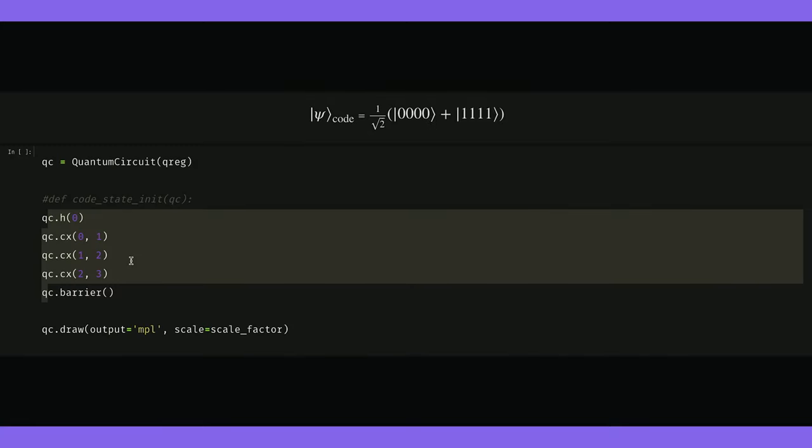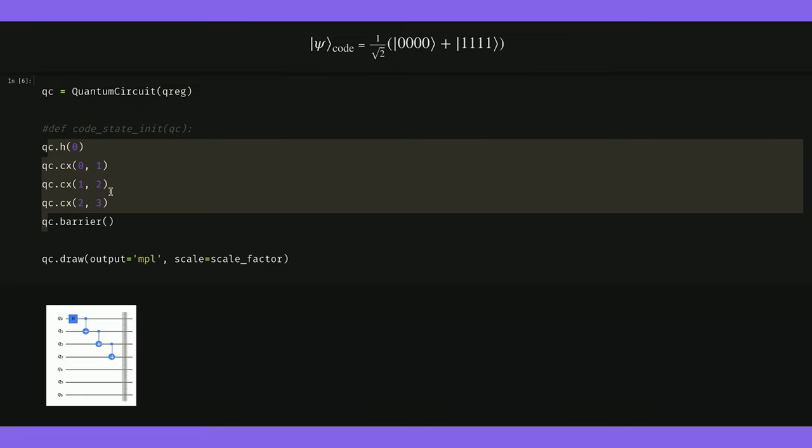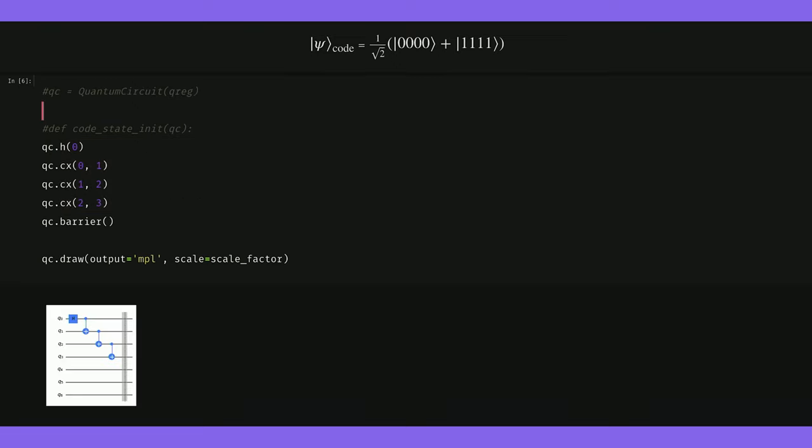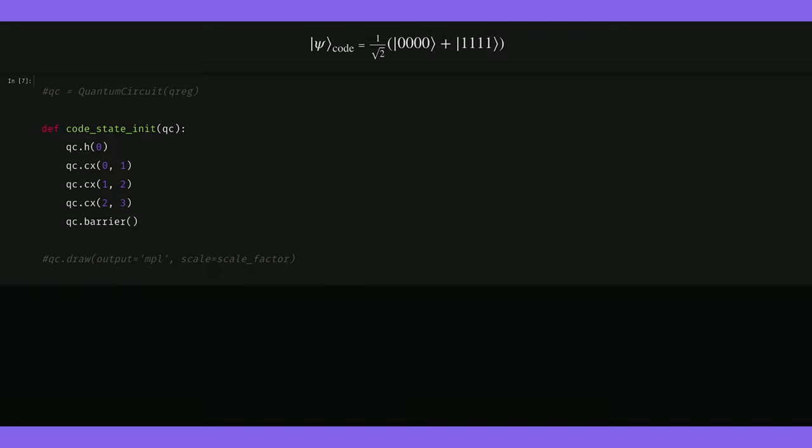We can do this by doing a Hadamard on qubit zero, followed by a series of CNOTs. Uncommenting and recommenting what we do and don't need, we can create a method that does this. I should note that this initial state preparation is not fault tolerant, meaning errors can occur and propagate. A more fault tolerant way to prepare the initial state is to measure stabilizers from some product state.